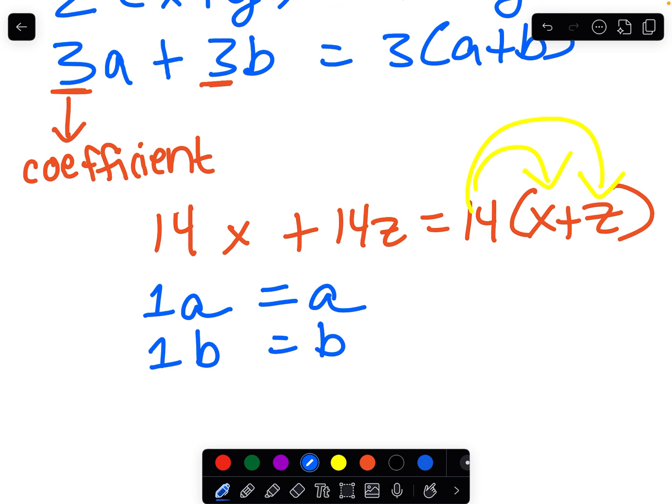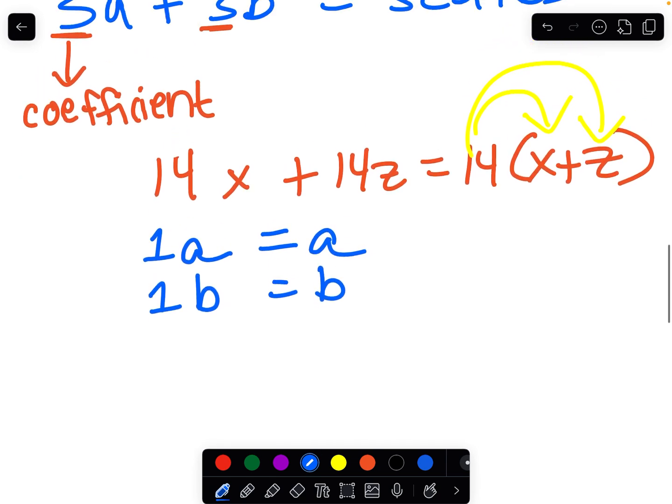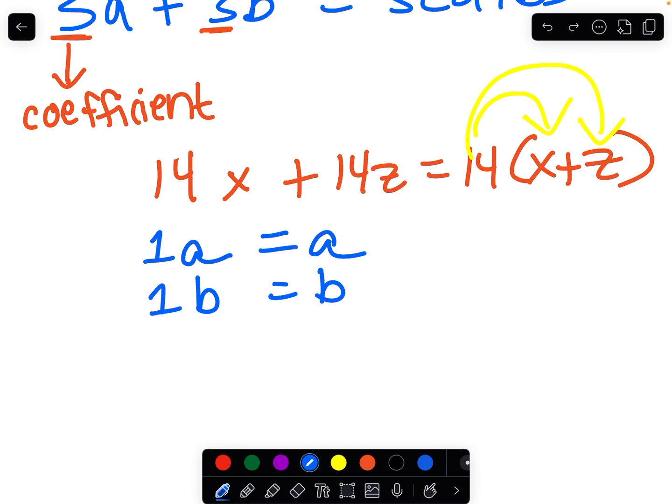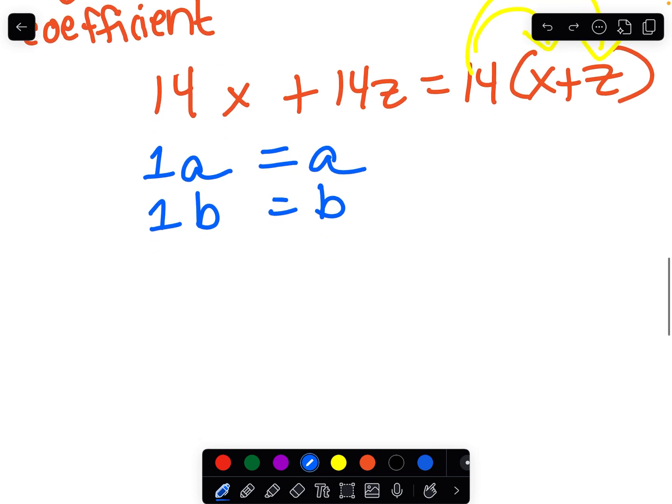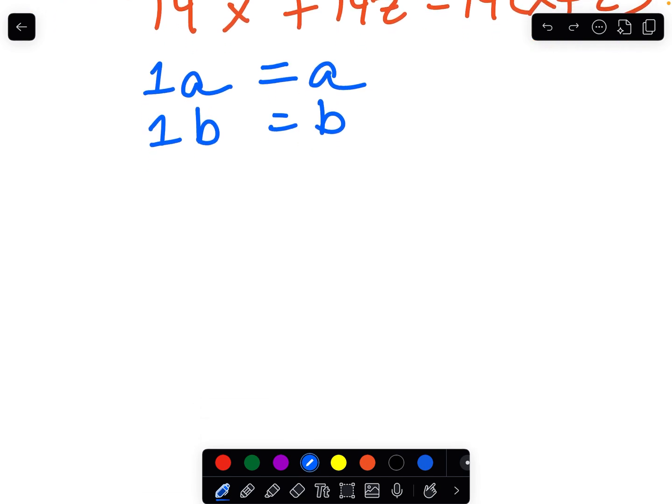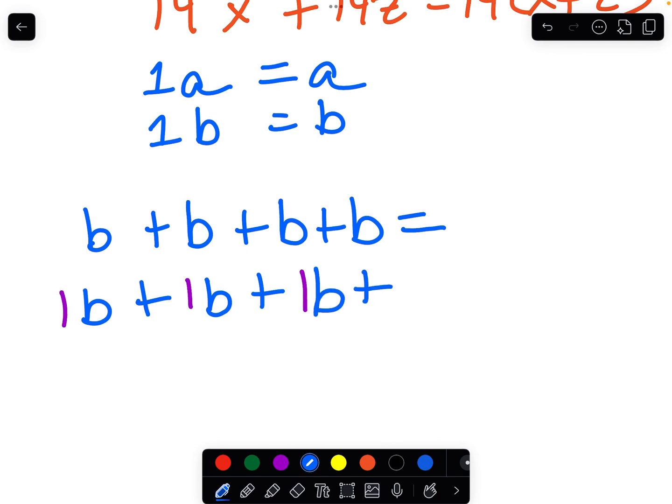Which tells us that any number multiplied by one is just itself. So we often don't put the coefficient of one when we are working with algebraic equations and expressions, but it's there and it's very helpful when we are doing something like b plus b plus b plus b. That's also the same as 1b plus 1b plus 1b plus 1b. I'm using different colors to try and show the coefficient. And what does that equal? Well, we add these up and they equal 4b.